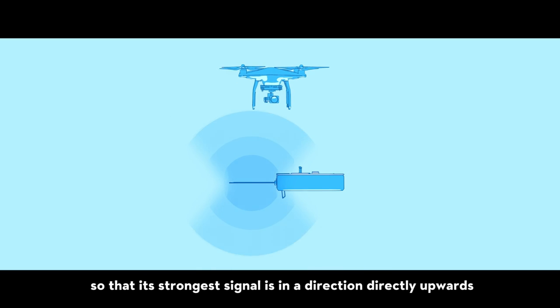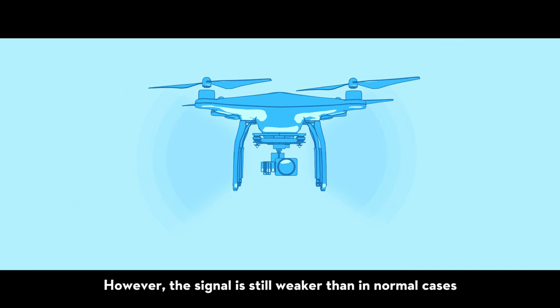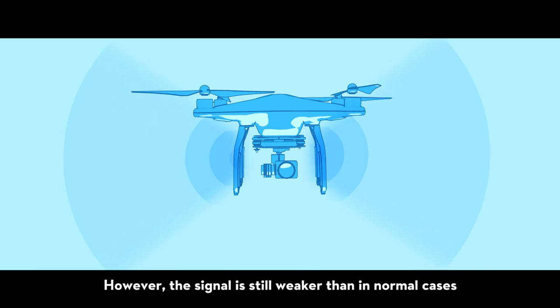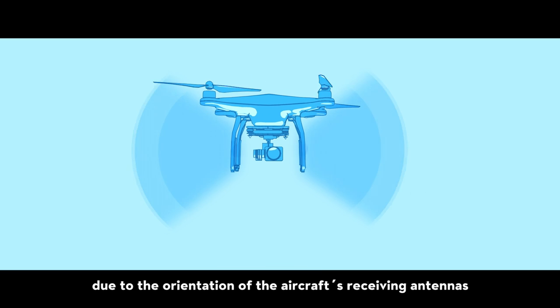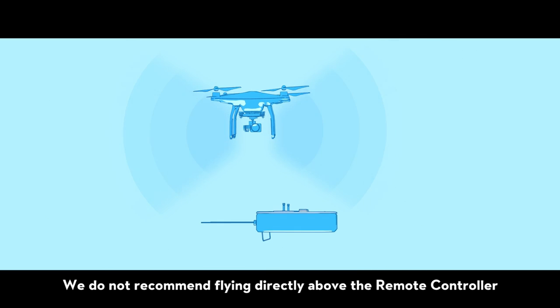However, the signal is still weaker than in normal cases due to the orientation of the aircraft's receiving antennas. We do not recommend flying directly above the remote controller.